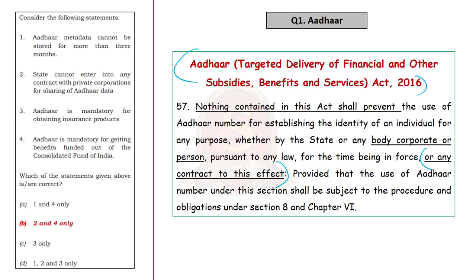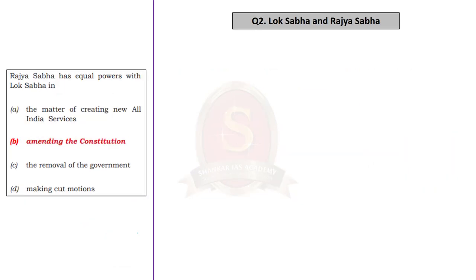If you know Statement 2 is correct, you can eliminate options A and C. By this, the probability of attempting the correct answer to this question has increased to 50%.